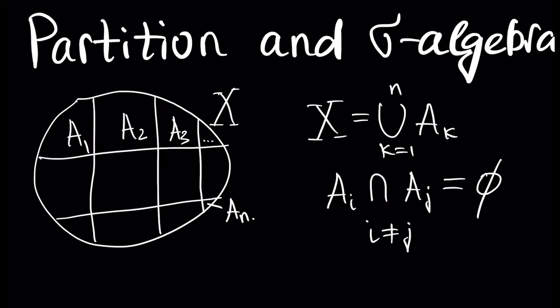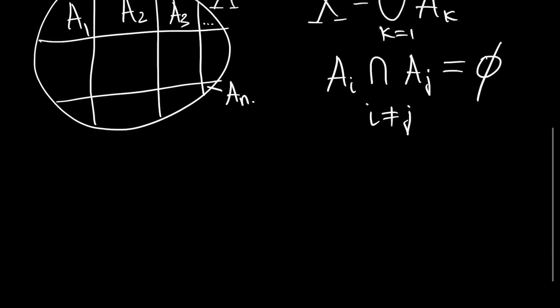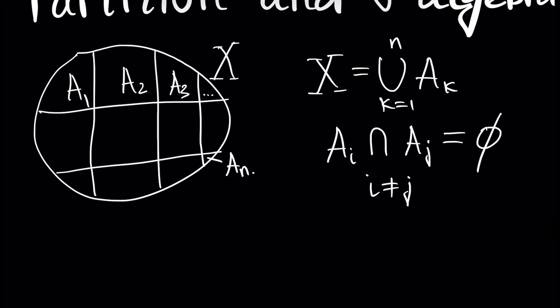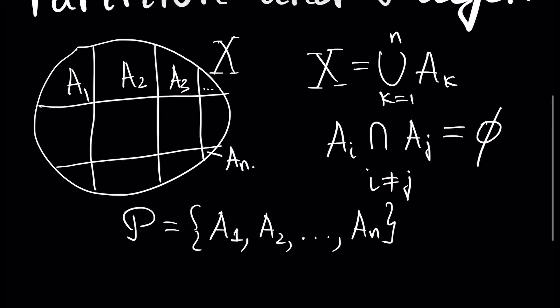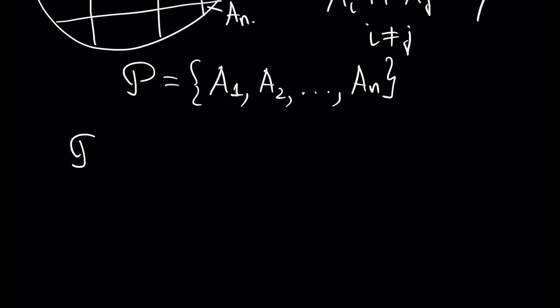In this case, we say that our set X has a partition, and we write it as P. Assume this is a partition of our set X. When we have partition P, we can construct a sigma algebra using elements of this partition.